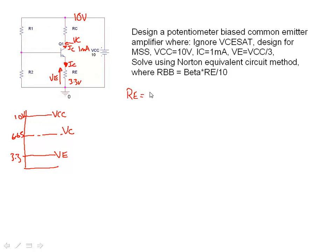Let's do a little bit of maths and calculate the values of RE and RC. RE is equal to basically VE over IC, which is equal to 3.3 volts divided by 10 to the minus 3, which gives us 3.3 kilo ohms. Very simple for the first calculation.